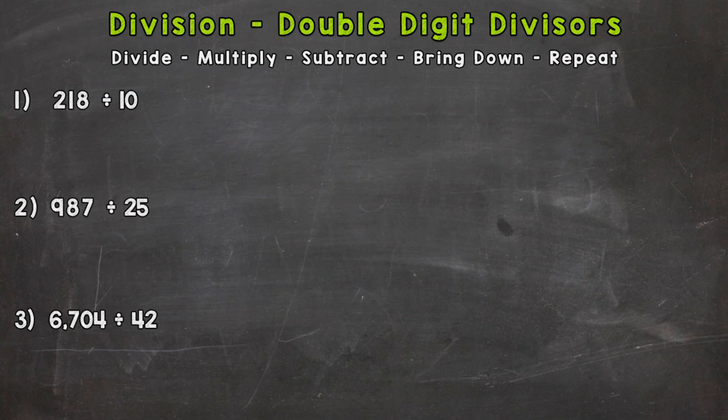If you want to do all three with me, that's fine as well. So let's start with number one here. We have 218 divided by 10, so 218 is the dividend and 10 is our double-digit divisor. So our first step is divide. We need to take a look at our first number in the dividend, which is a 2, and ask ourselves, can we divide 2 by 10? And the answer to that is no, we can't and get a whole number.